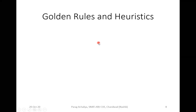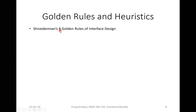Today we will see the golden rules and heuristics. There is a scientist, Shneiderman, who stated eight golden rules of interface design. These eight golden rules are mainly related with how the interface should be, how the design of the interface should be — everything stated by this scientist in his eight golden rules.